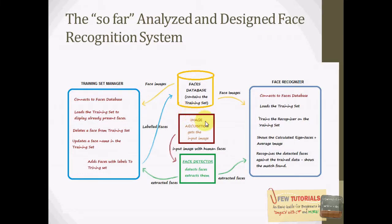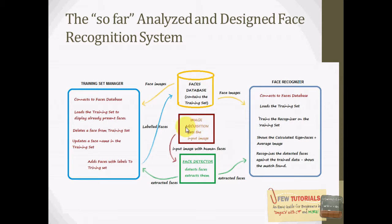The software analysis and design of our face recognition system has allowed us to find out all the basic, necessary jobs that our system should be able to do. We have also been able to group those functionalities based on the type of work they're doing into components — for example, the face recognizer, the image acquisition, face detector, and the training set manager.